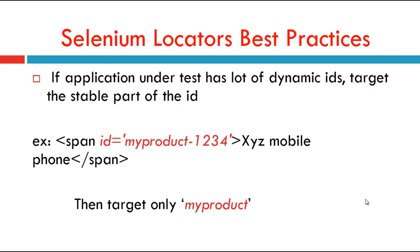If the application under test has lots of dynamic IDs, then target the stable part of the ID. For example, if span ID is equal to 'my-product-123' and the text is 'XYZ mobile phone', then target only 'my-product' in that ID.